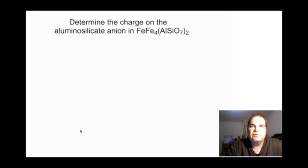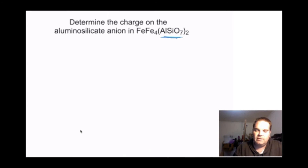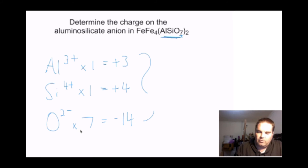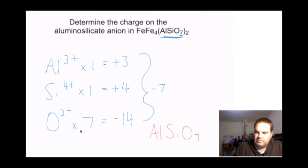Now let's look at aluminosilicates. For AlSiO7, we determine the charge on the aluminosilicate anion. Aluminium has a 3-plus charge, silicon is 4-plus, and oxygen is 2-minus. One aluminium equals plus 3, one silicon equals plus 4, and 7 oxygens equals minus 14. Plus 3 plus 4 is plus 7; minus 14 gives minus 7. So AlSiO7 has a 7-minus charge.